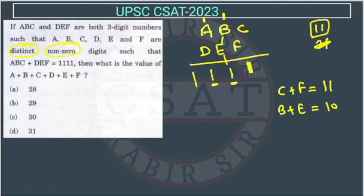Many students might think 7 plus 4 equals 11, but we have to add the carry of 1 as well. You cannot forget that 1. We need to ensure we get 1 at the end, so A plus D will again be 10.